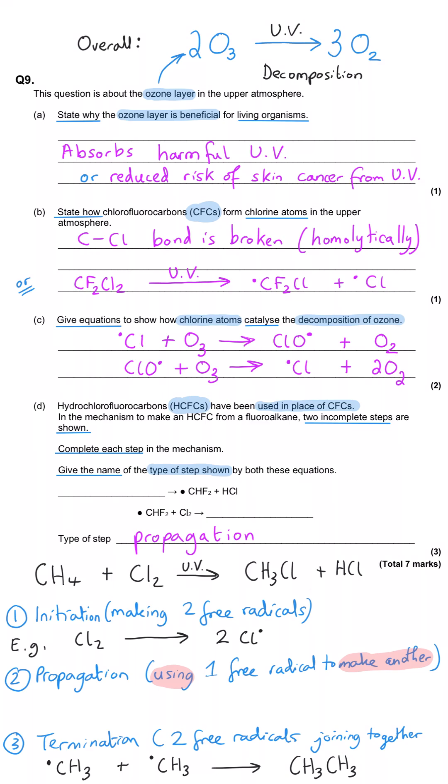Now, this is more complicated because we're not reacting methane. We can't be reacting methane because this free radical that's a product of propagation step one has got fluorine in it.